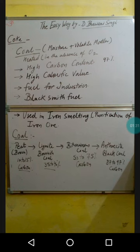Now, what are the uses of coke? First, coke contains a high carbon content of approximately 97%, so it is a good source of fuel. Second, when it burns it gives a high value of heat, so we can say it produces a high calorific value. Coke is used as fuel for industries.